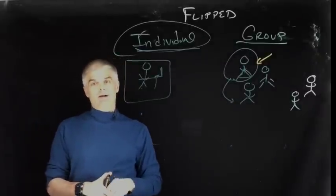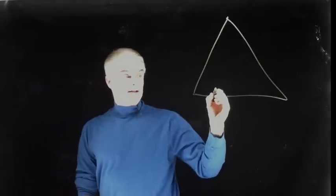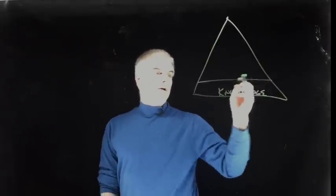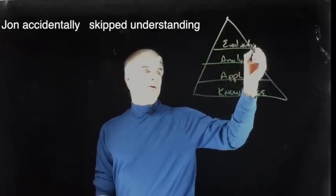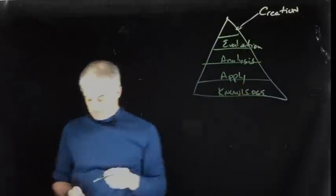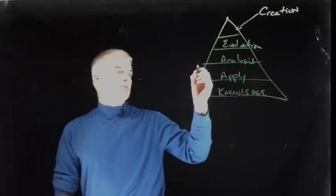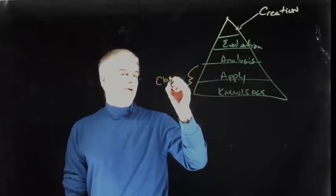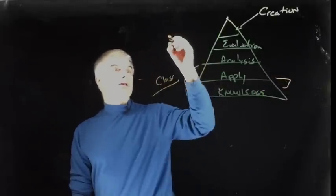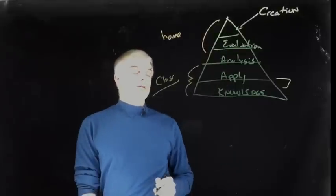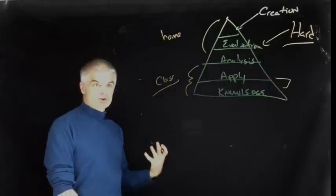Another way to look at this is to think about Bloom's taxonomy. At the bottom we have knowledge, then application, analysis, evaluation, and creation. What usually happens in a traditional classroom is that teachers spend the vast majority of their class time down here because they're teaching their kids stuff. That's what's happening in the group space. And then we send students home here to do the hard stuff. But of course this is the hard stuff, right? This is what students struggle with.